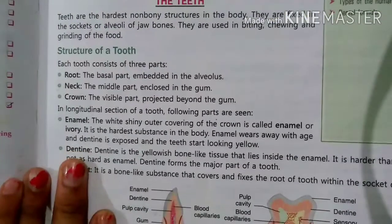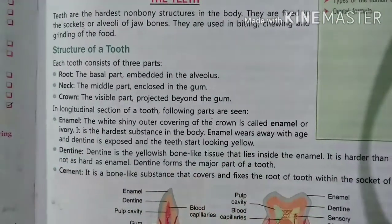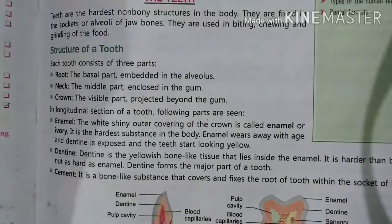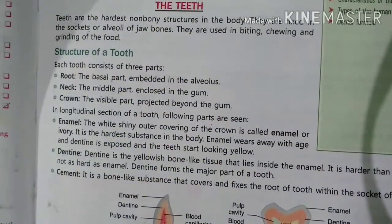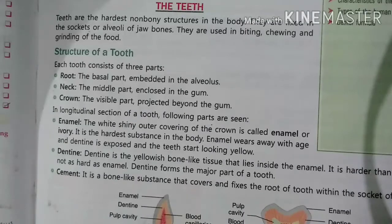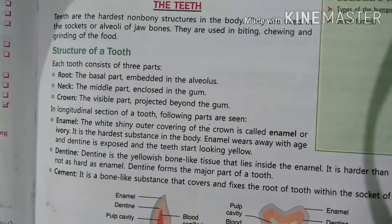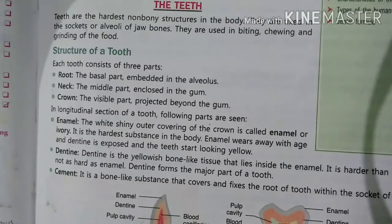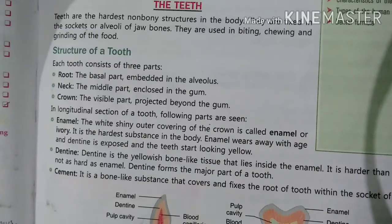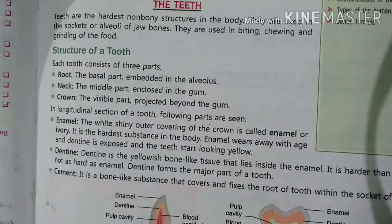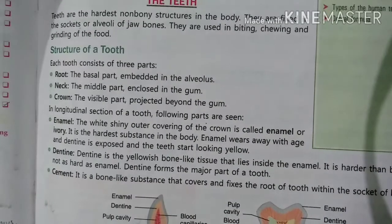What is the structure of a tooth? Each tooth consists of three parts: root, neck, and crown. Root is the basal part which is embedded in the alveolus. Neck is the middle part which is enclosed in the gum. Crown is the visible part which projects beyond the gum. In longitudinal section of a tooth, the following parts are seen.